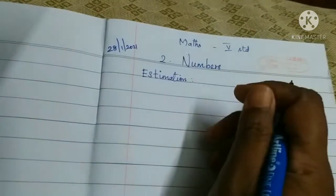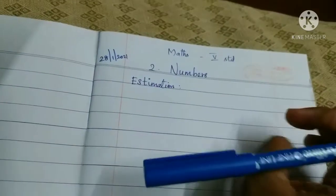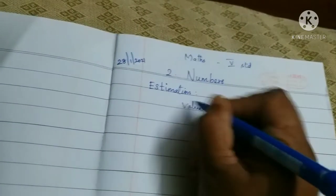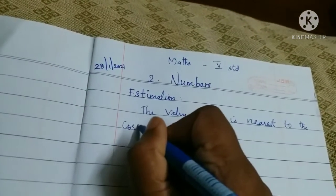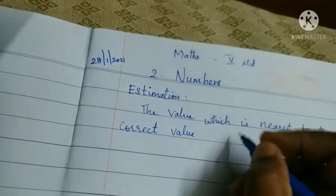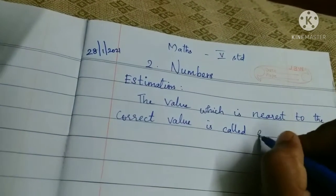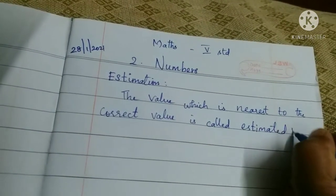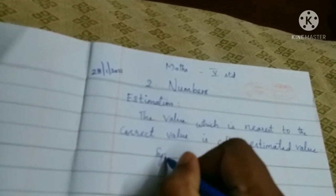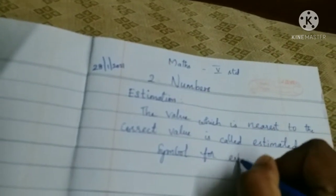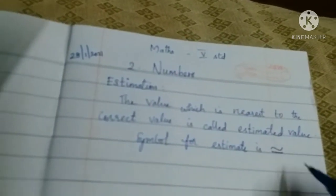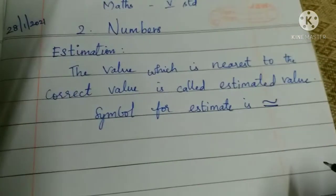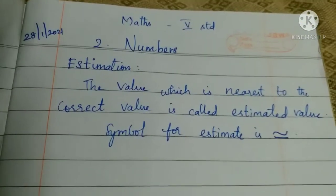Estimation is nothing but the value that is nearest to the correct value. The value which is nearest to the correct value is called the estimated value. The symbol for estimate — we put a dash with a curve like this. So this is the symbol for estimate.